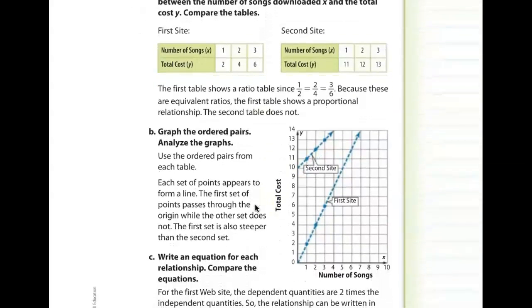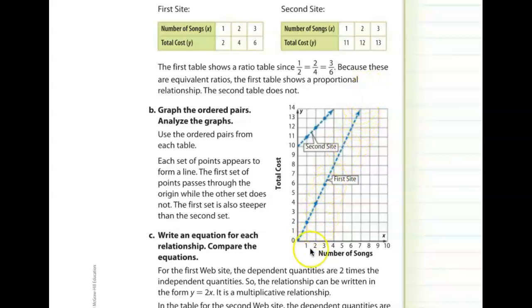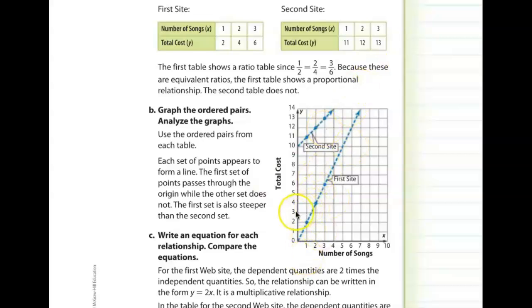When we graph the first table, it goes through the origin and increases by a factor of 2 each time — $2 for every song, a straight line through the origin. The second graph is also a straight line, but it does not go through the origin. If you purchase zero songs, there is still a $10 fee, so it starts on the y-axis at 10. The first is multiplicative; the second is additive.